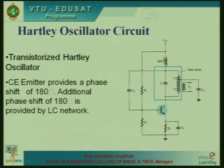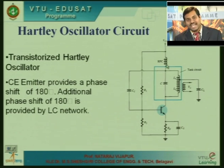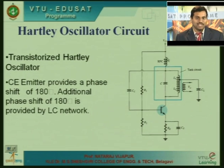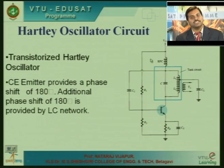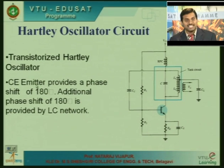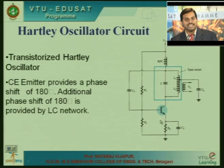R3 and R4 are part of the feedback network. The common emitter amplifier provides 180 degree phase shift, and the LC circuitry also provides a further 180 degree phase shift, giving 360 degrees total. The LC tank circuit is placed on the collector, and the potential divider network R1 and R2 bias the transistor amplifier.